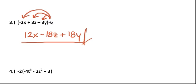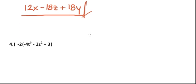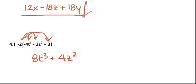And then finally, one last problem. Same thing. Just distribute it out. So minus 2 times minus 4t cubed would be 8t cubed, since the minuses cancel. As well as here, we should get 4z squared. And then minus 2 times plus 3 would be minus 6. And that's our answer.